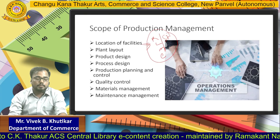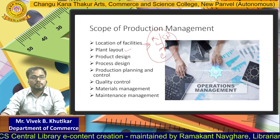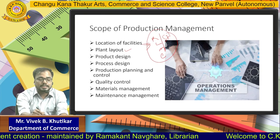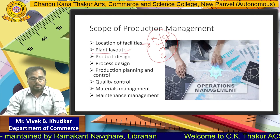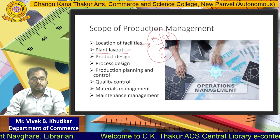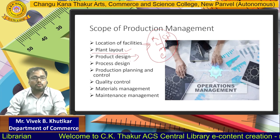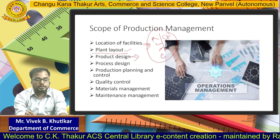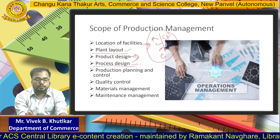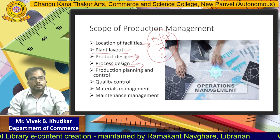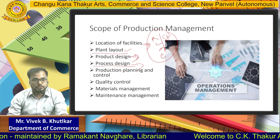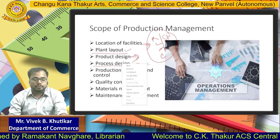Next is Plant Layout, which means the design or layout of our factory. According to our product line or process, we have to design the factory or plant. Next important area is Product Design, which is nothing but the size, shape, color or dimension of the product. We have to design our product so that we can get competitive advantage and our product can be different from our competitors. Next is Process Design. If our product is not produced in a single process but comes under multiple processes, then we have to design our process in such a way that we optimally utilize our resources and wastage is minimum.